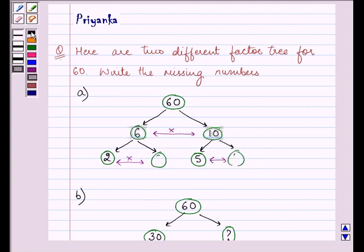Now let us think about it. We know that when 6 gets multiplied by 10 it will give us 60. So what number we should fill in here which on multiplying by 2 will give us 6.